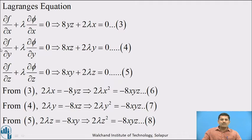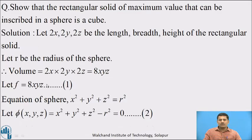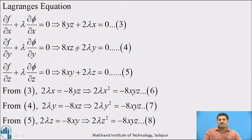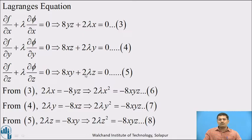The next equation is ∂f/∂y + λ(∂φ/∂y) = 0. Differentiating F partially with respect to y gives 8xz, plus lambda times the partial derivative of phi with respect to y, which is 2y, giving 8xz + 2λy = 0. Call it equation number 4. The last equation is ∂f/∂z + λ(∂φ/∂z) = 0. The partial derivative of F with respect to z is 8xy, plus lambda times the partial derivative of phi with respect to z, which is 2z, equal to 0. Call it equation number 5.